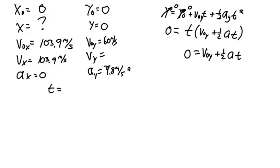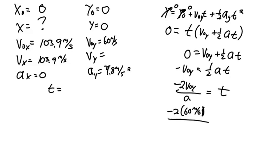Subtract v naught y from both sides, equals 1 half a t, and I'll multiply both sides by 2 and divide by a. So, negative 2 v naught y over a is equal to t. That's negative 2 times our starting velocity in the y is 60 meters per second, 60 meters per second divided by negative 9.8 meters per second squared is equal to our time. And that's going to give us a value of 12.2 seconds is equal to t.